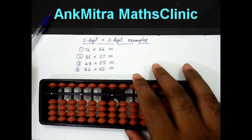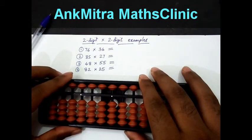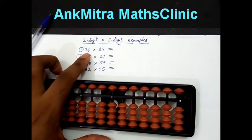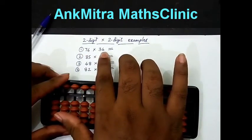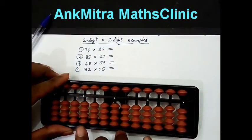Let us once again show you this method with 4 new examples. Let us look at the first example. 76 × 34, that is 2-digit × 2-digit. The answer will be a 4-digit answer.